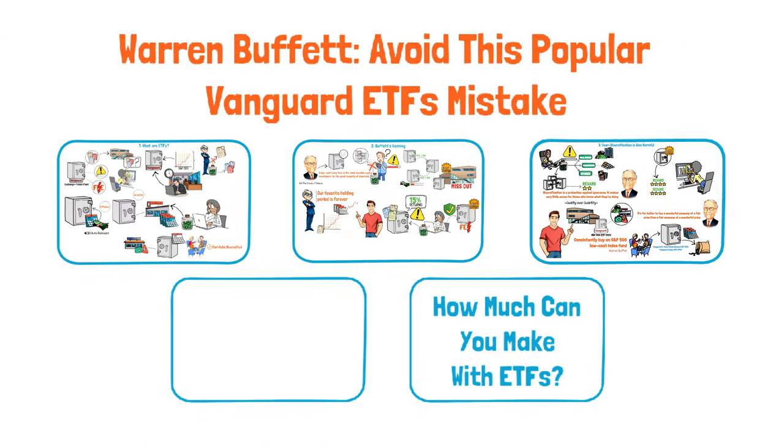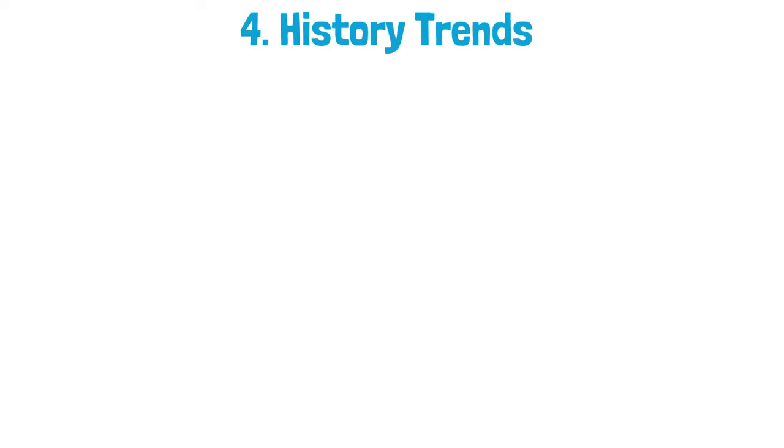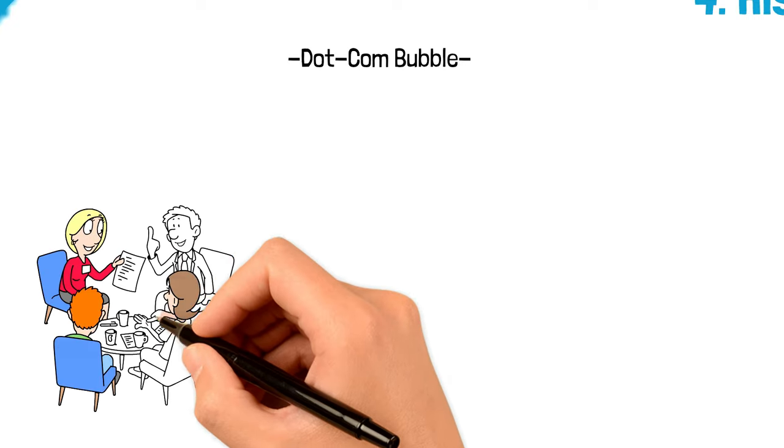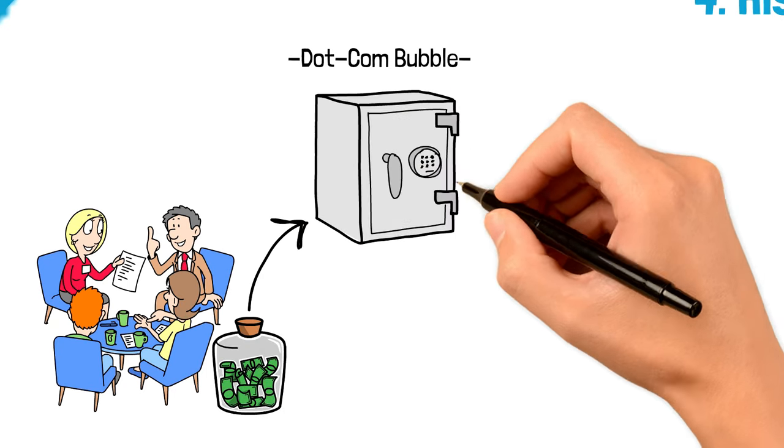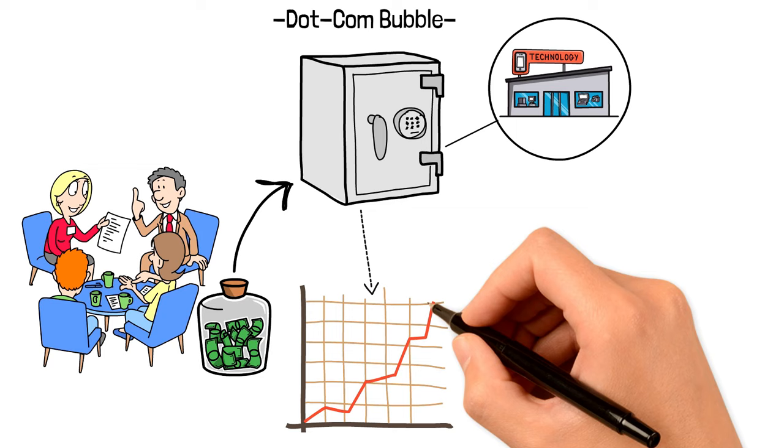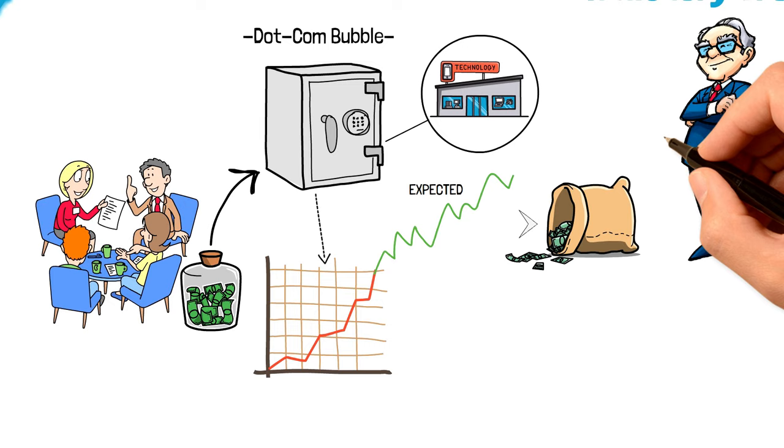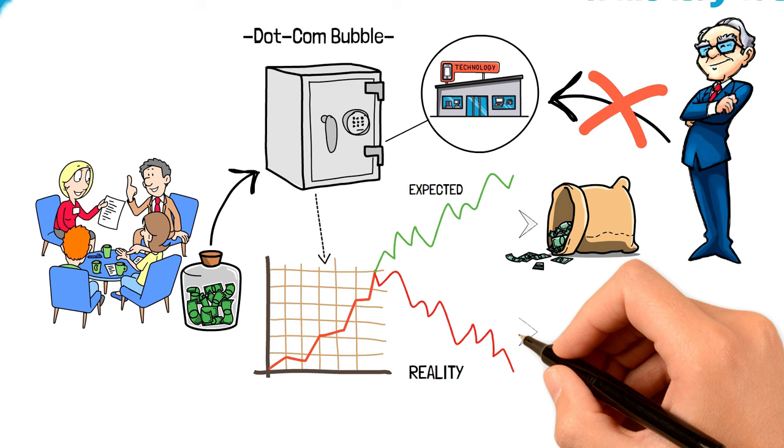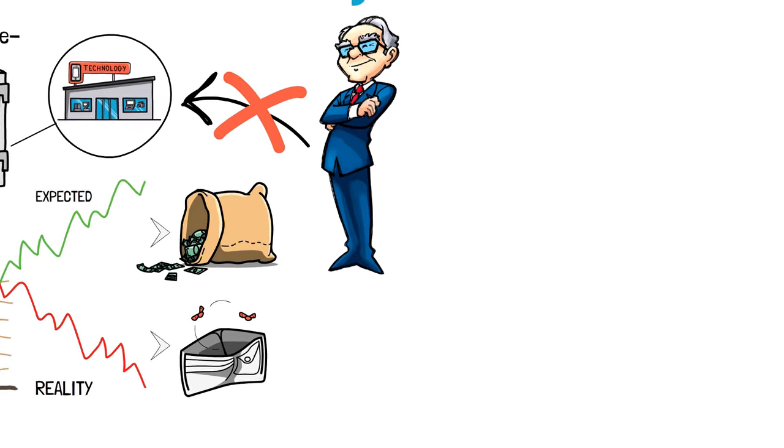Let's sprinkle in some historical context. Take the dot-com bubble of the late 1990s and early 2000s as a classic example. It was a time when investors were wildly over-diversifying into tech stocks and tech-focused ETFs, chasing after the latest internet companies with little regard for their underlying value. Buffett steered clear of this frenzy, sticking to his principles. When the bubble burst, those who had spread their investments too thinly suffered significant losses.